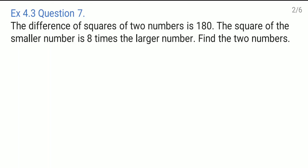Hello everyone. This is exercise 4.3, question number 7. The difference of squares of two numbers is 180. The square of the smaller number is 8 times the larger number. We don't know the larger number. Find the two numbers.